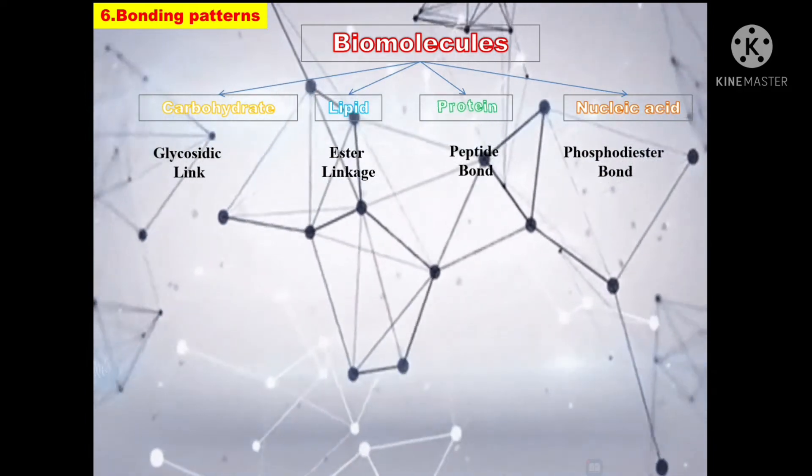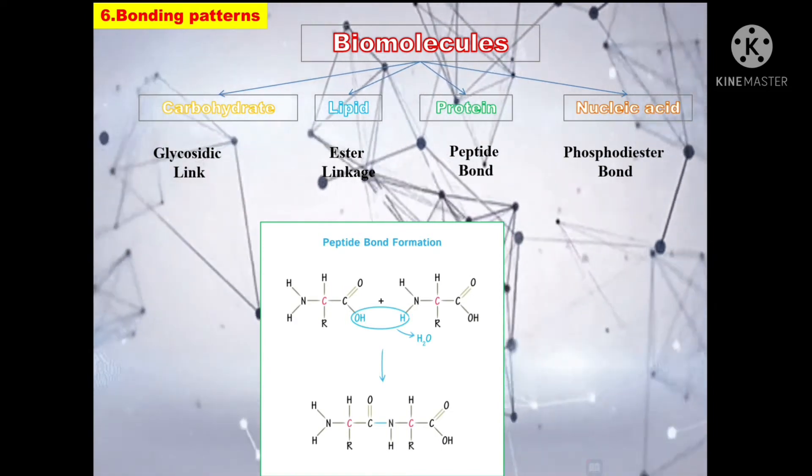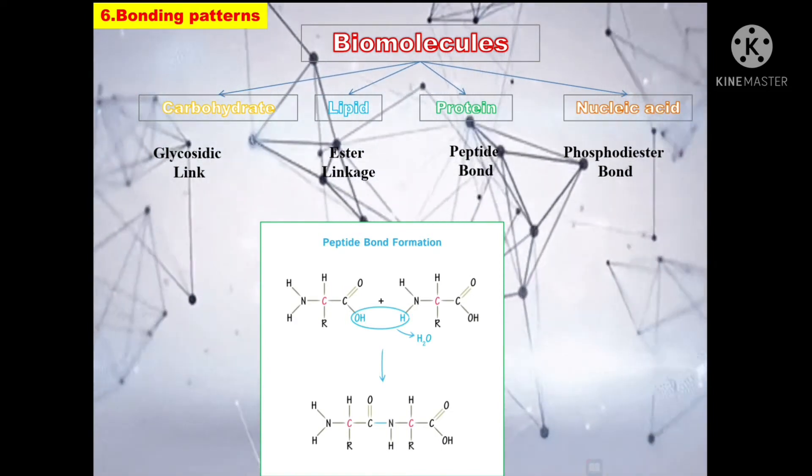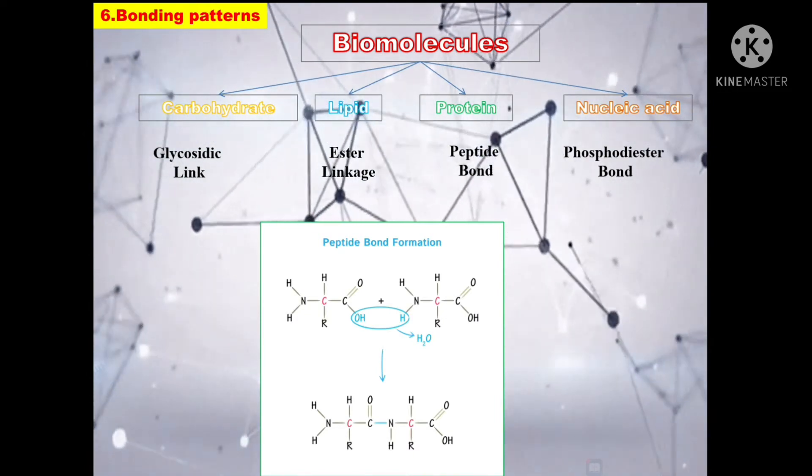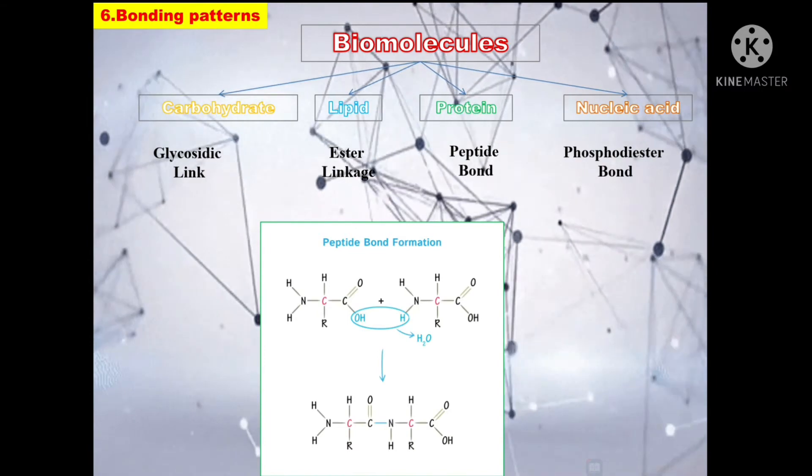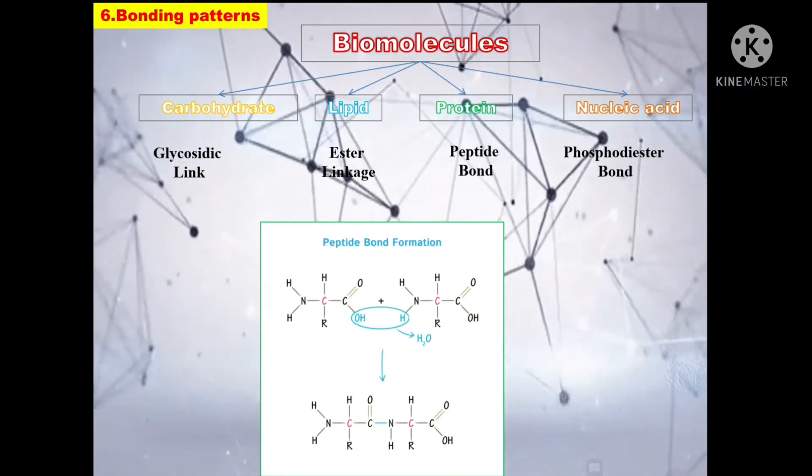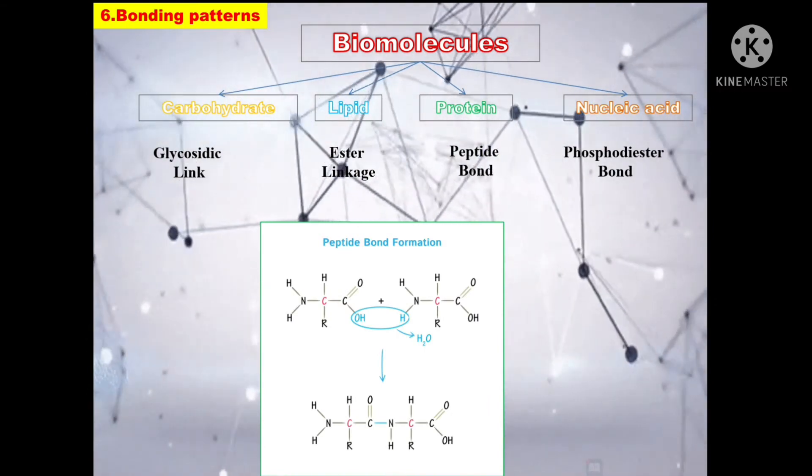The next one is protein. The bond that is formed between the compounds to form a protein is termed as a peptide bond. A peptide bond is an amide type of covalent chemical bond linking two amino acids. It is formed by dehydration synthesis during the reaction.